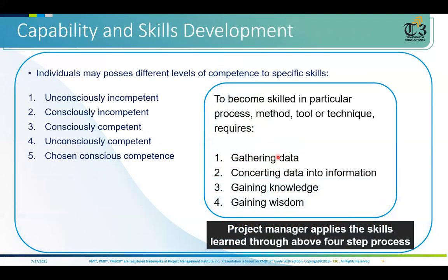As discussed in the day one video: data is raw form, information is classified data, knowledge is verified information, and wisdom is approved knowledge. As a project manager you must assess your team's capability levels. The categories are: unconsciously incompetent (haven't recognized their limit), consciously incompetent (have surrendered with a defined limit), consciously competent (team leaders who can solve problems), unconsciously competent (highly capable but unaware of limits — convert them to consciously competent), and the smart category who choose their competence level according to the situation.